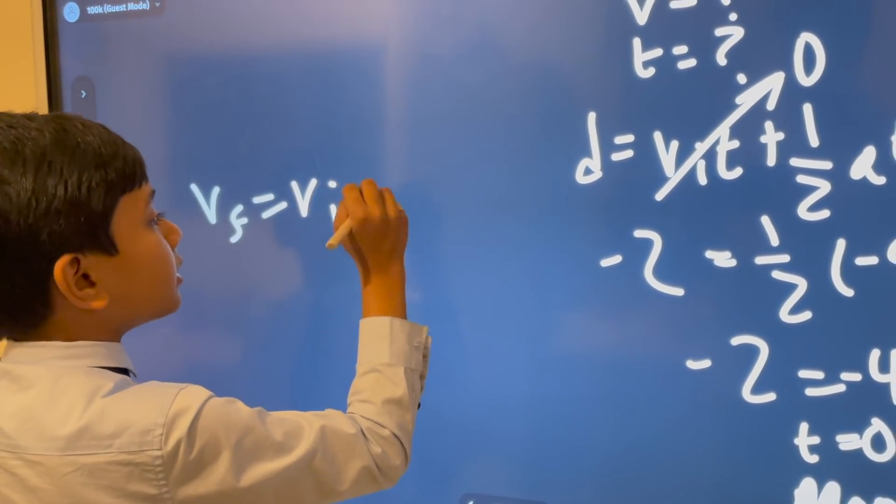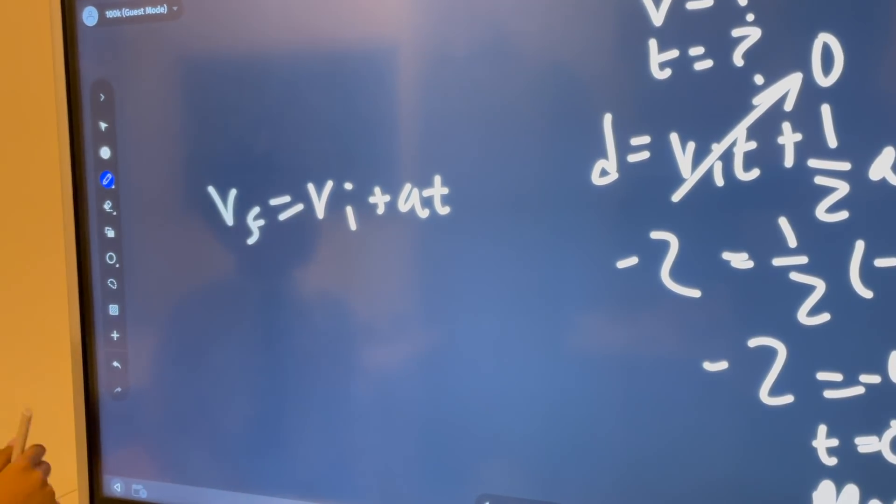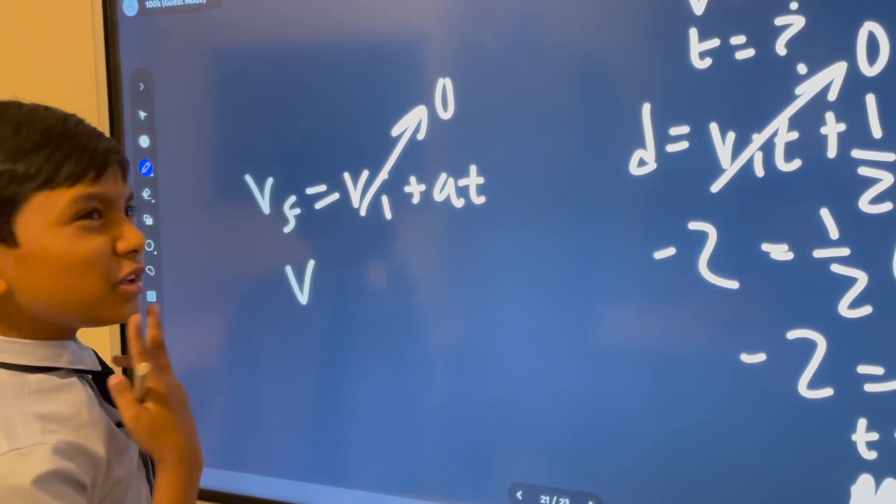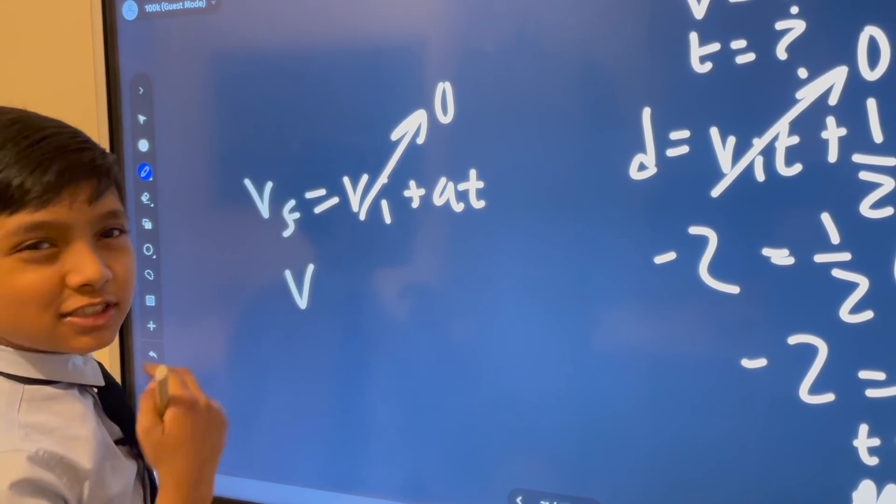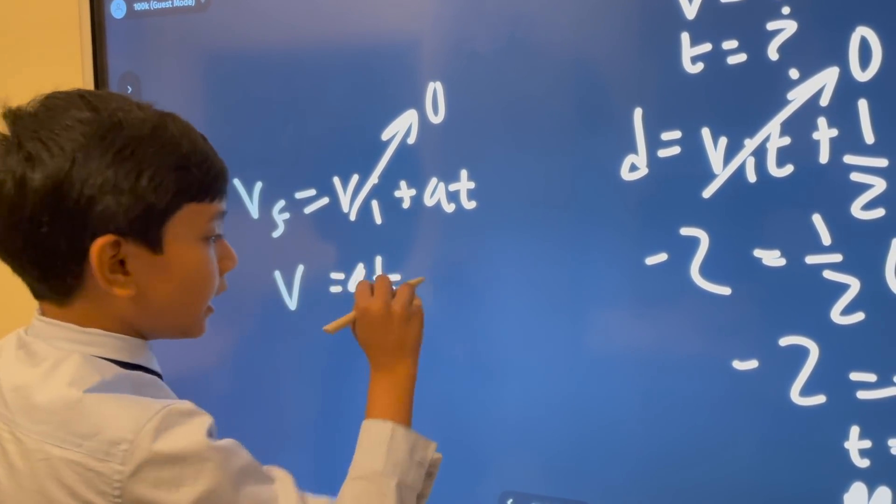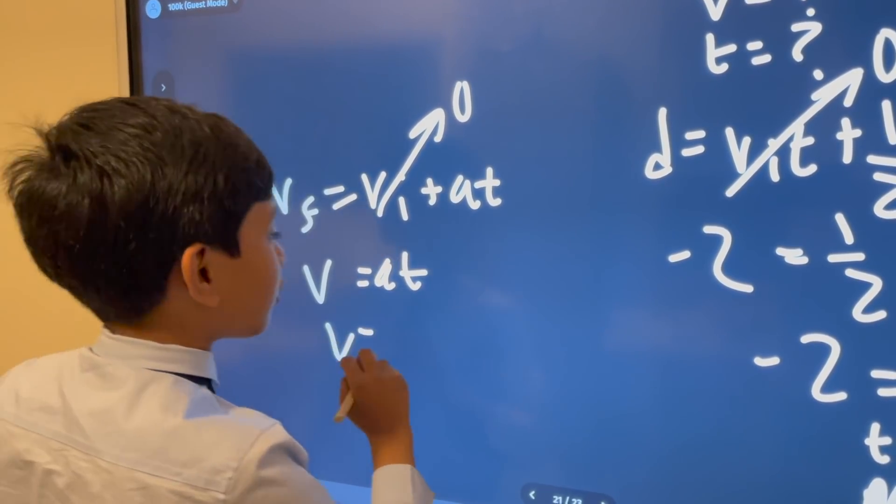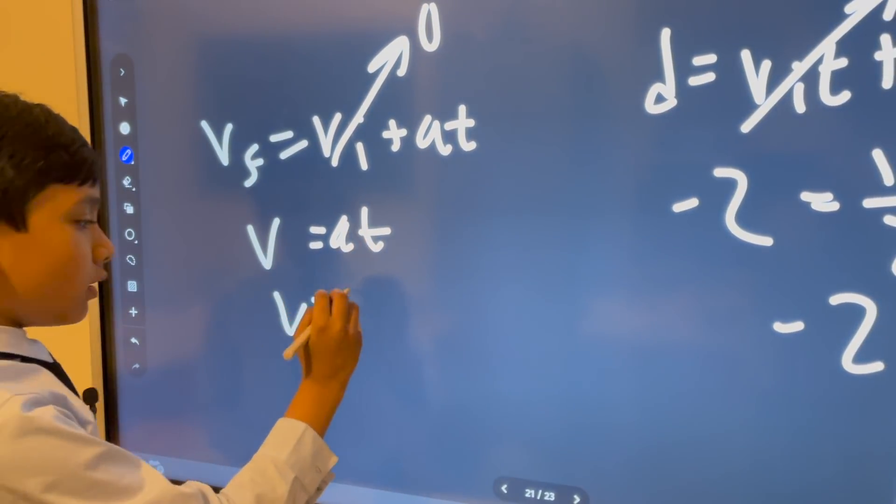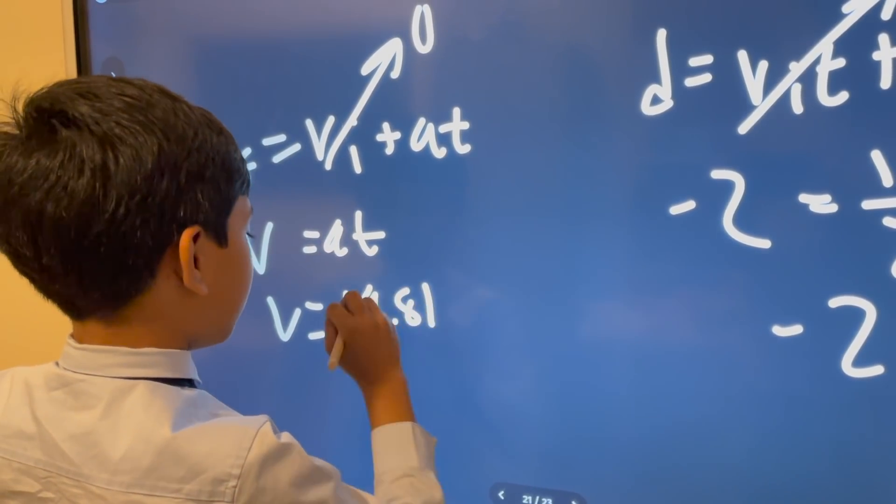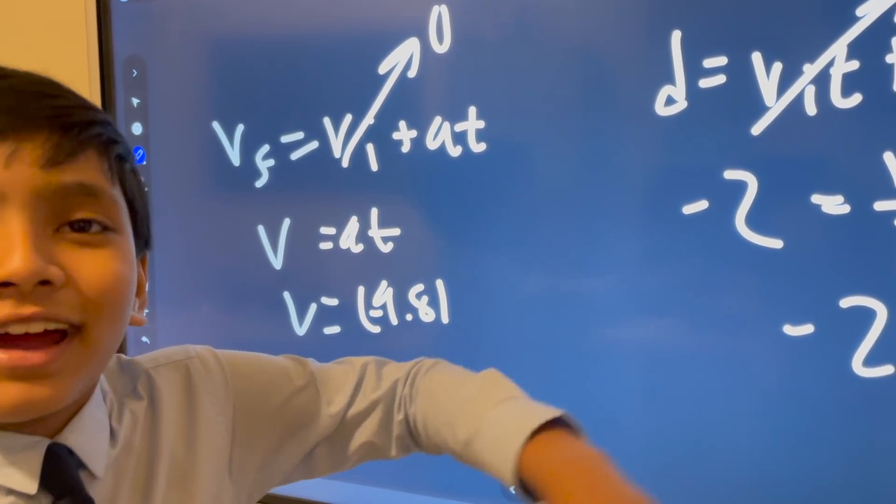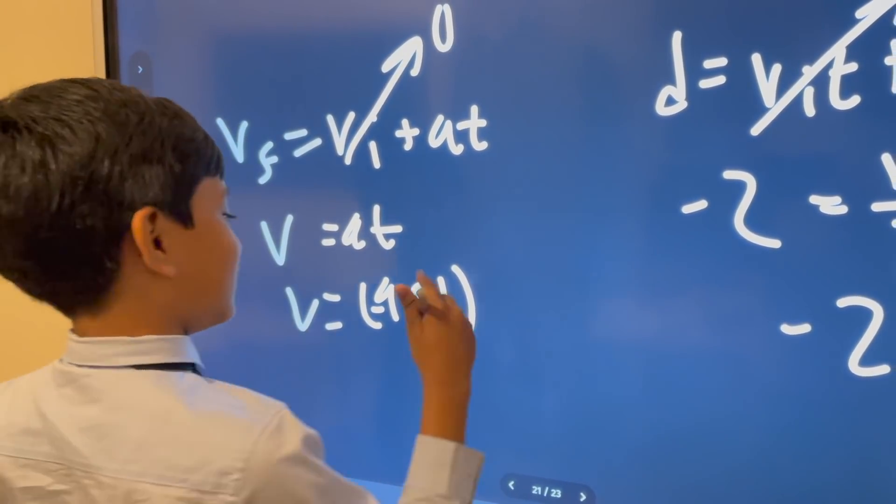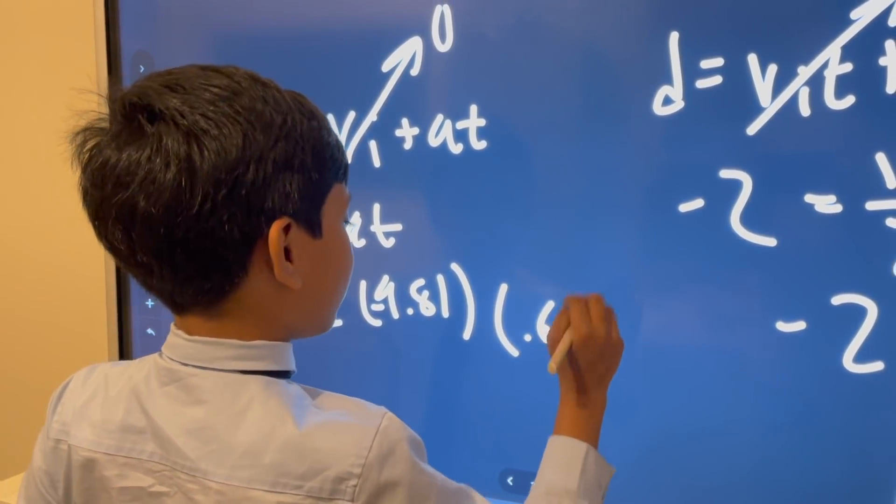V f is v i plus a t. Now v i goes to zero, making this look more like a common equation in physics. V equals a t. And now the thing is, since we're falling down, down, down, that means acceleration is nine point eight one. Minus! Minus! Minus! Minus! Of course, there's no such thing as negative time. And t is point six four.